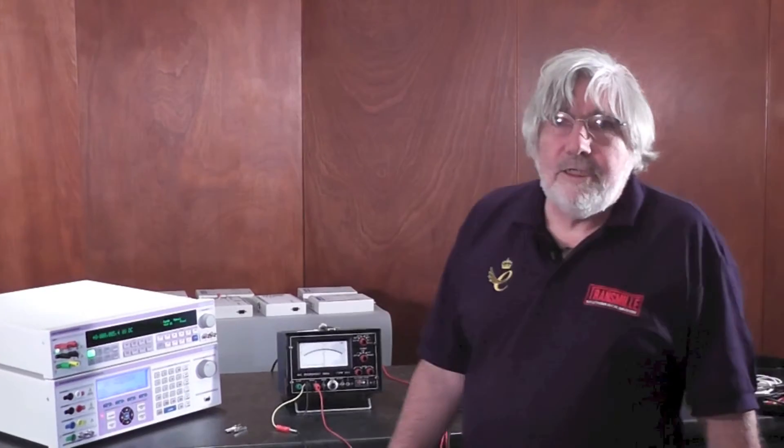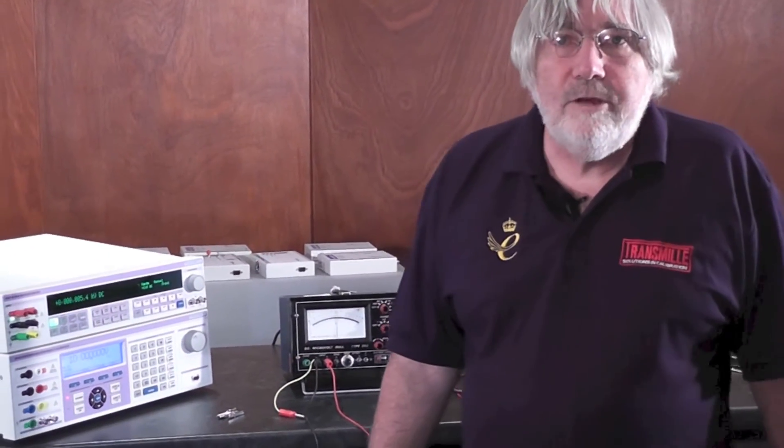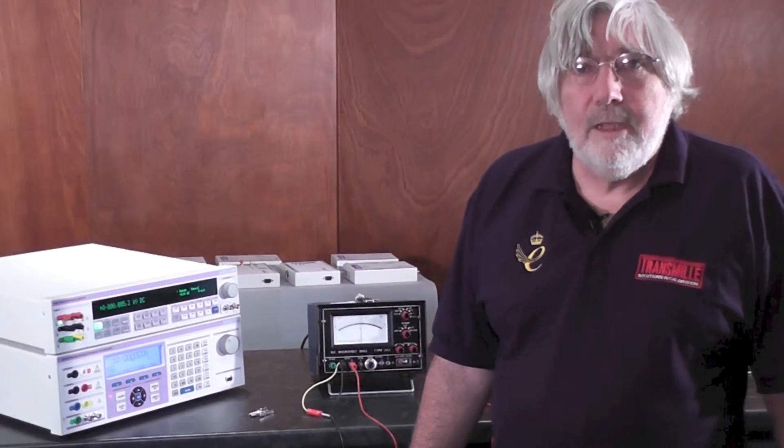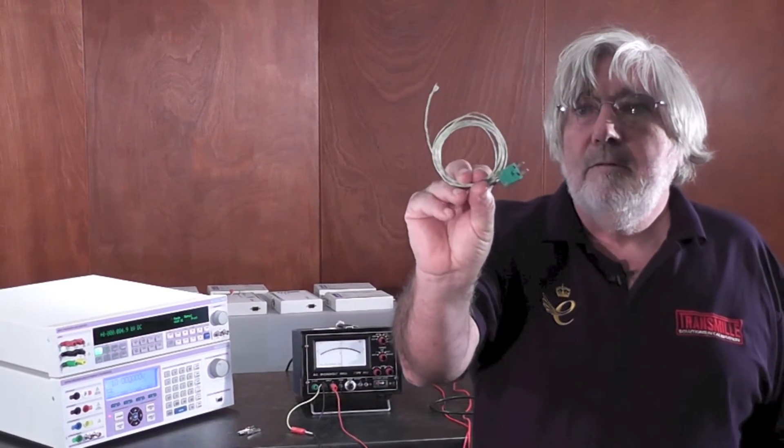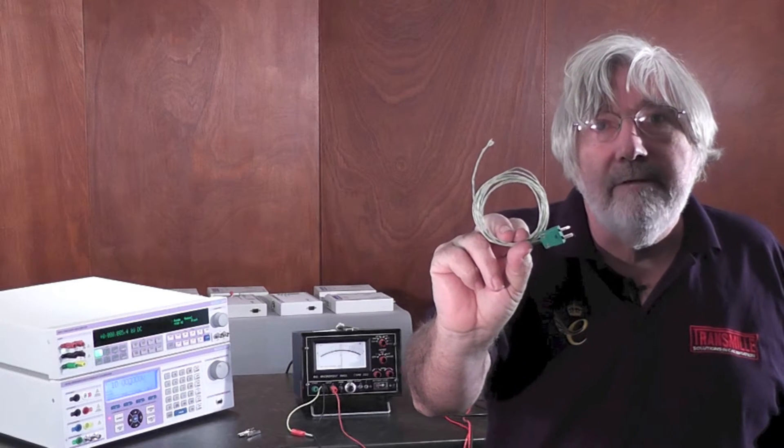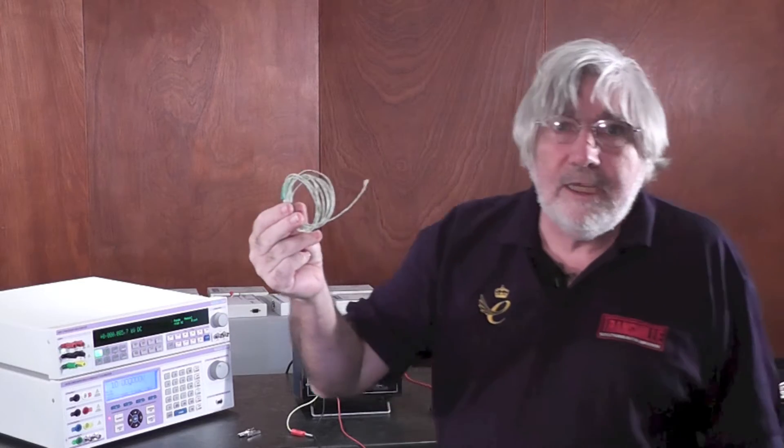The first one that catches a few people out is the thermoelectric voltage generated when two dissimilar metals come into contact with each other. This effect is used in thermocouples, which are simply two wires of different materials twisted together at the end. Very easily can produce voltages in excess of 40 microvolts per degree C.